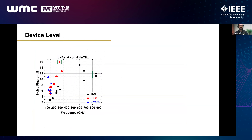Above 100 GHz, the noise figure of LNAs increases significantly. Looking at CMOS LNAs above 300 GHz, there are hardly any — which means all circuits above 200 GHz using CMOS are mixer-first circuits with no LNA. Mixers are very noisy so SNR drops drastically. Even BiCMOS performs badly at those high frequencies. It doesn't really make sense to use CMOS at such high frequencies because performance degrades drastically.